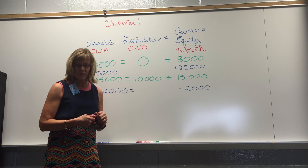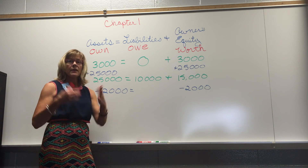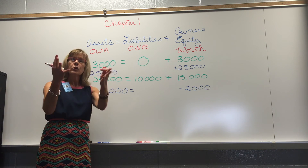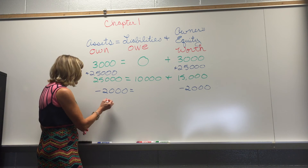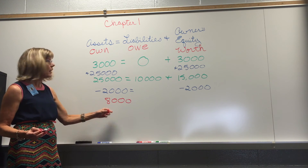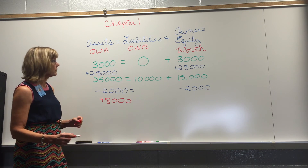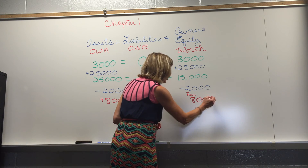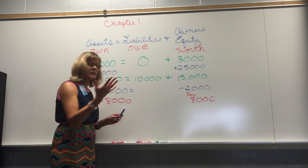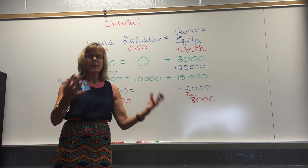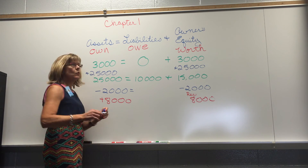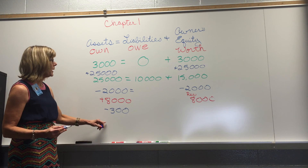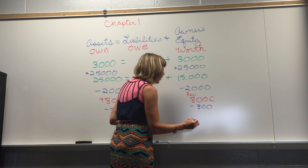We also have expenses and revenue that impact this equation. Let's say we had a really good month and took in $8,000 in donut sales. That's $8,000 in cash, increasing our assets by $8,000 and increasing owner's equity through revenue. We also have expenses: employee wages, light bills, taxes. Let's say we spent $300 on utilities this month — we subtract $300 in cash and decrease owner's equity by $300 because of that expense.